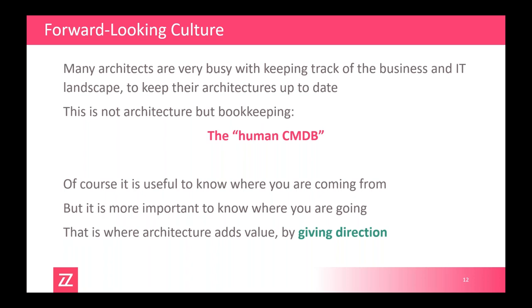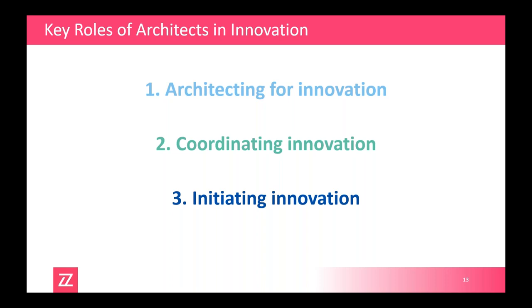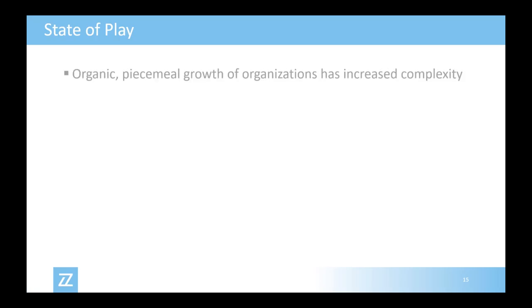So when talking about innovation and the roles of architects, we see three main types of roles. At the end of the presentation we'll run a poll to ask about your role in innovation. The first role is architecting for innovation — as an architect you're responsible for making sure that innovation can happen. What we see in many organizations is that piecemeal growth without enough control led to increasing complexity, followed by resource optimization that resulted in large centralized systems that are very difficult to change.